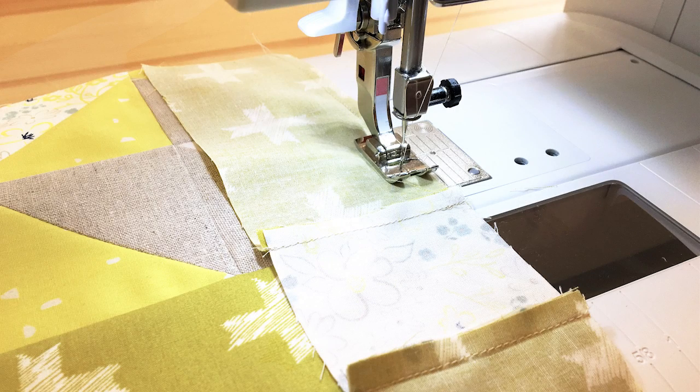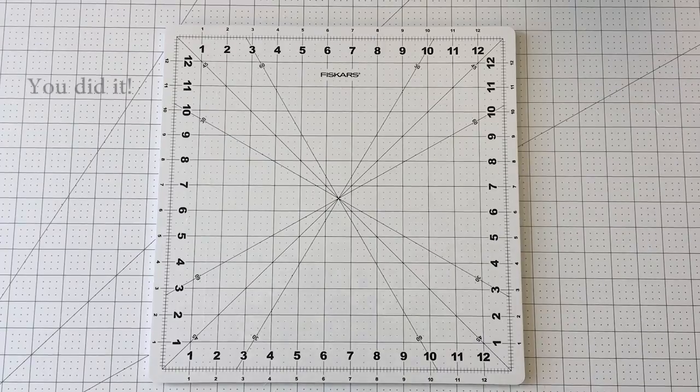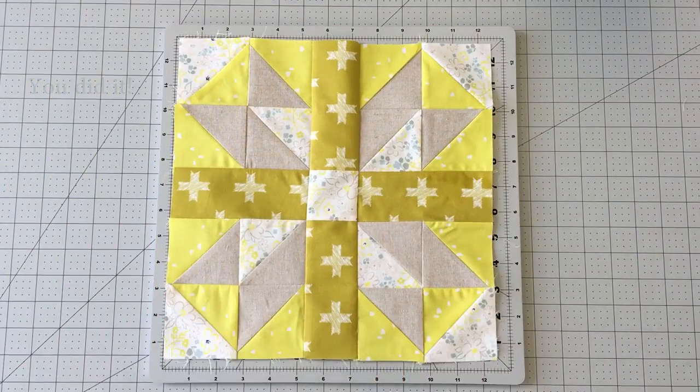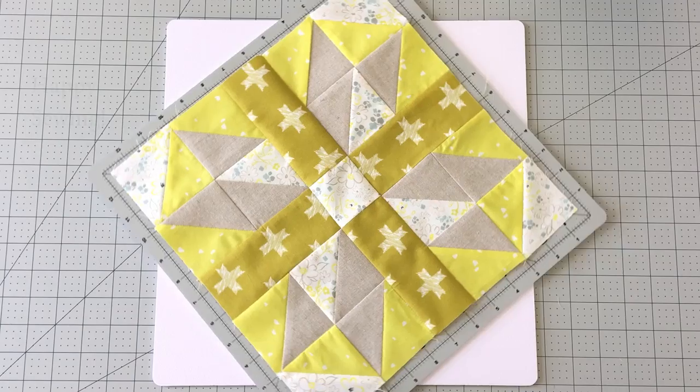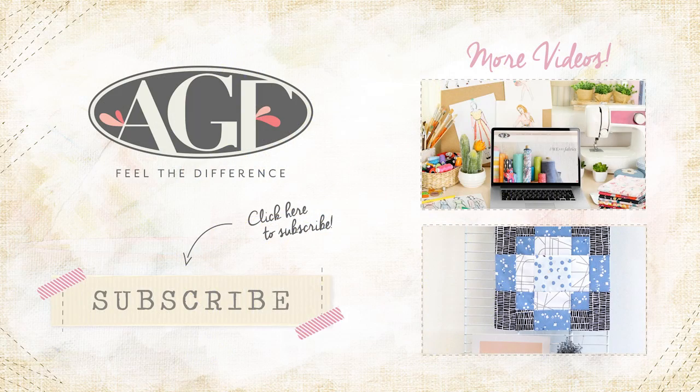Sew all three pieces together matching up seams. And voila! Your Jack in the Box quilt block is now complete. For more fun sewing videos, subscribe to the ADF channel. Leave us a thumbs up if you enjoyed the video. Until next time, happy sewing!